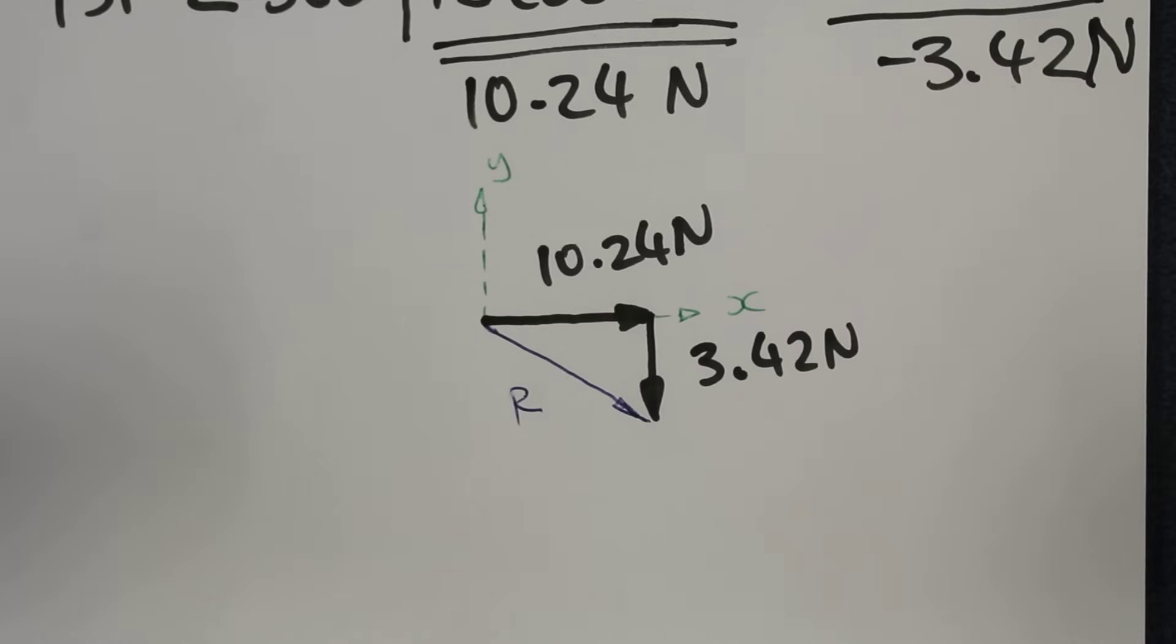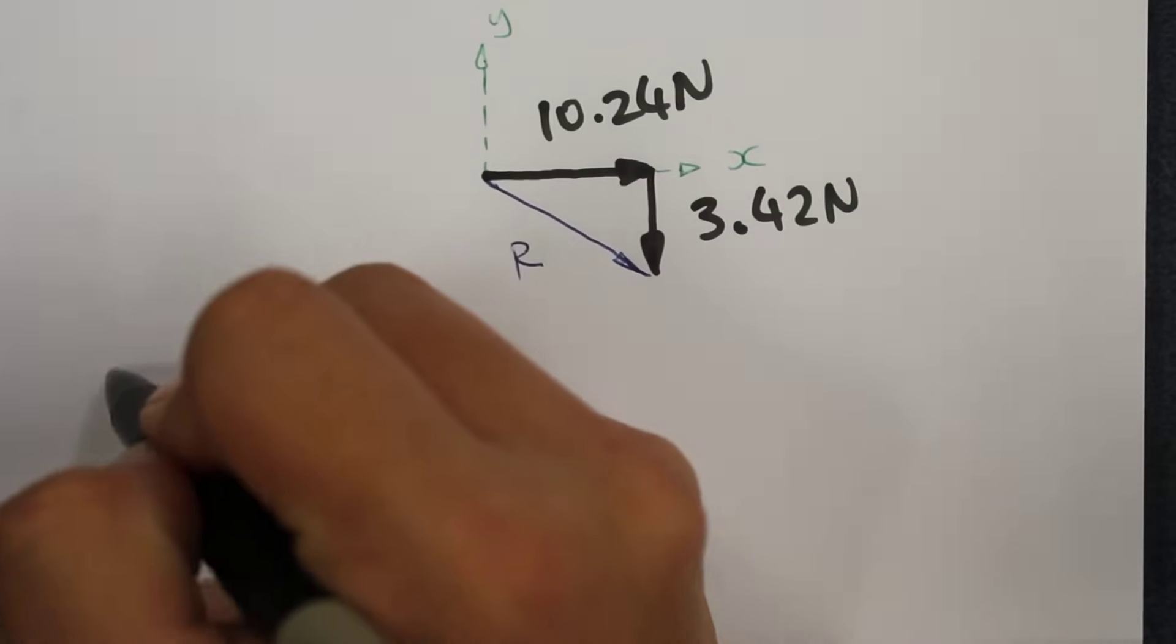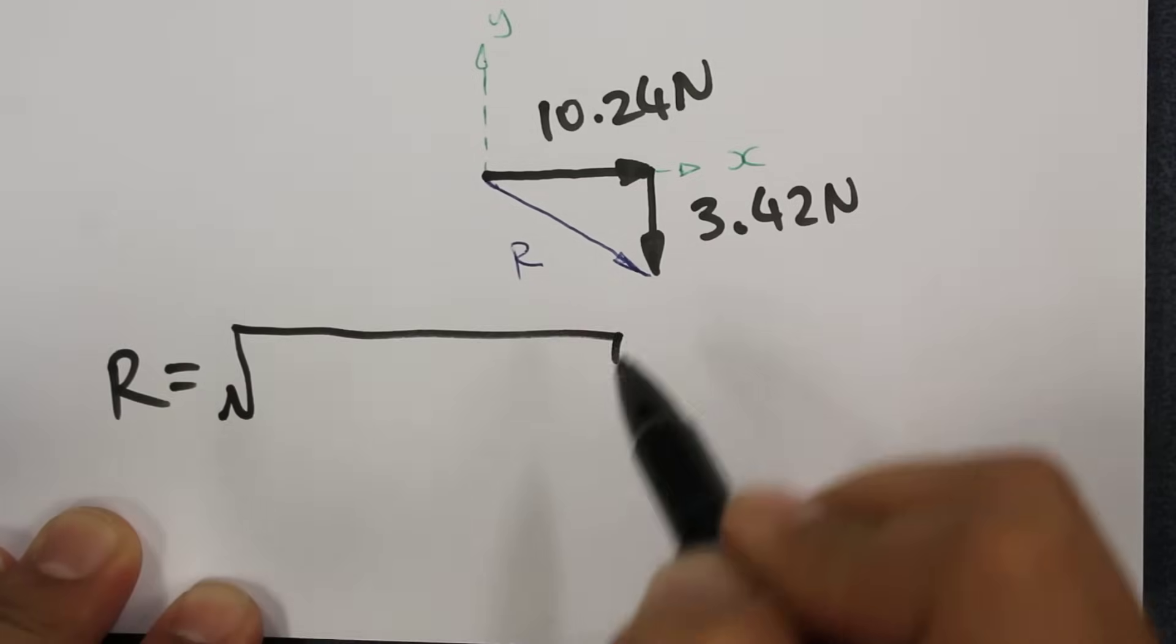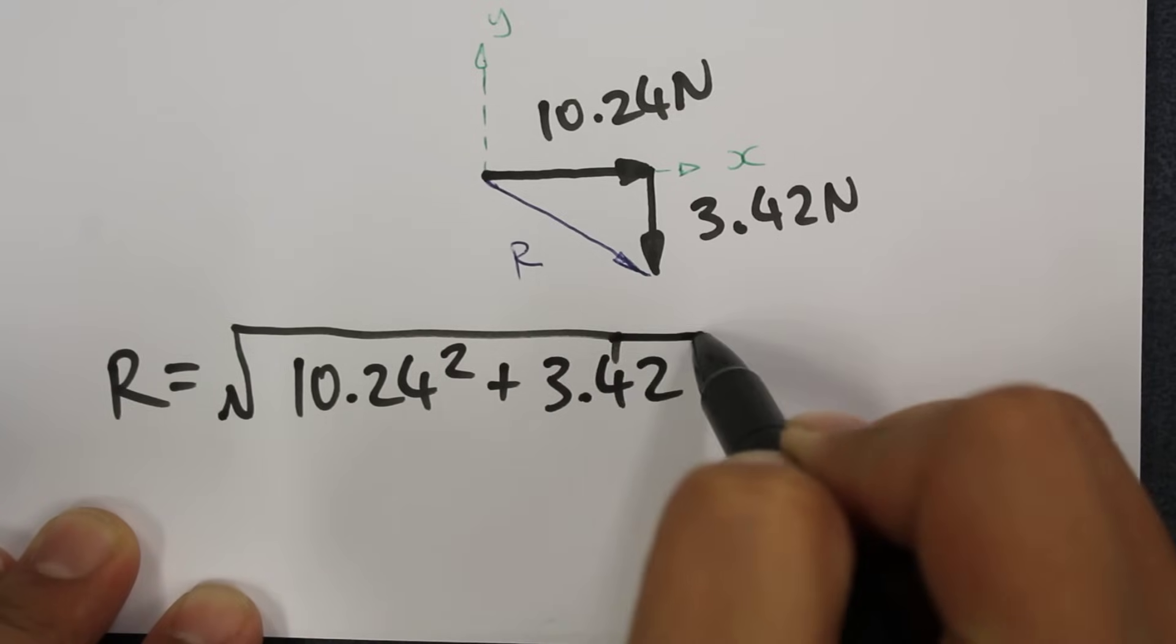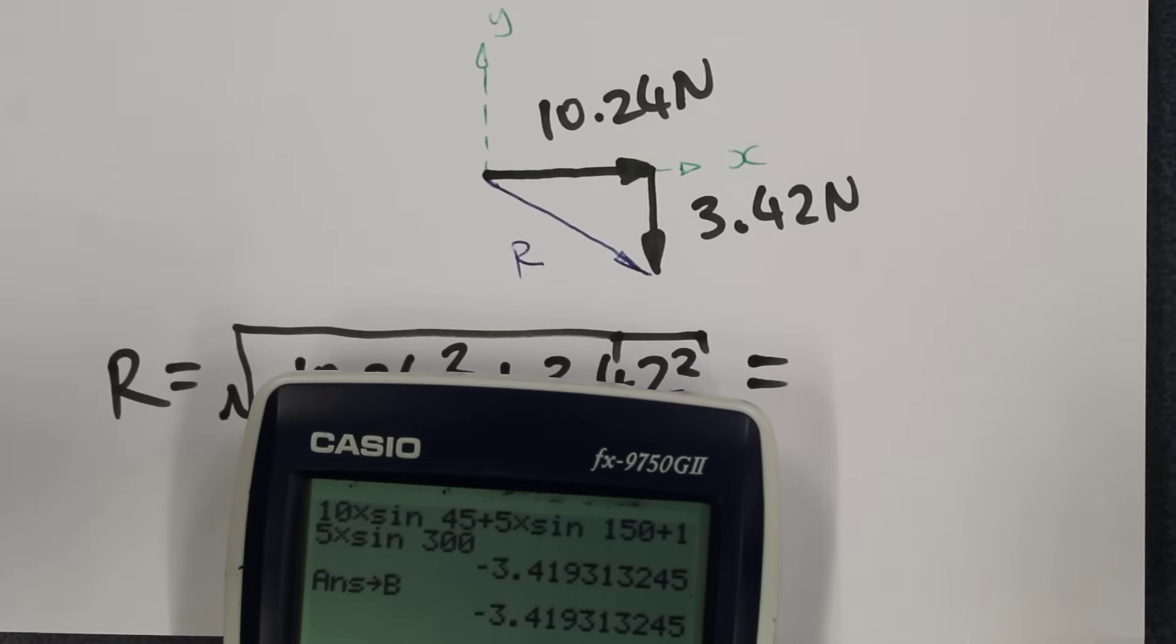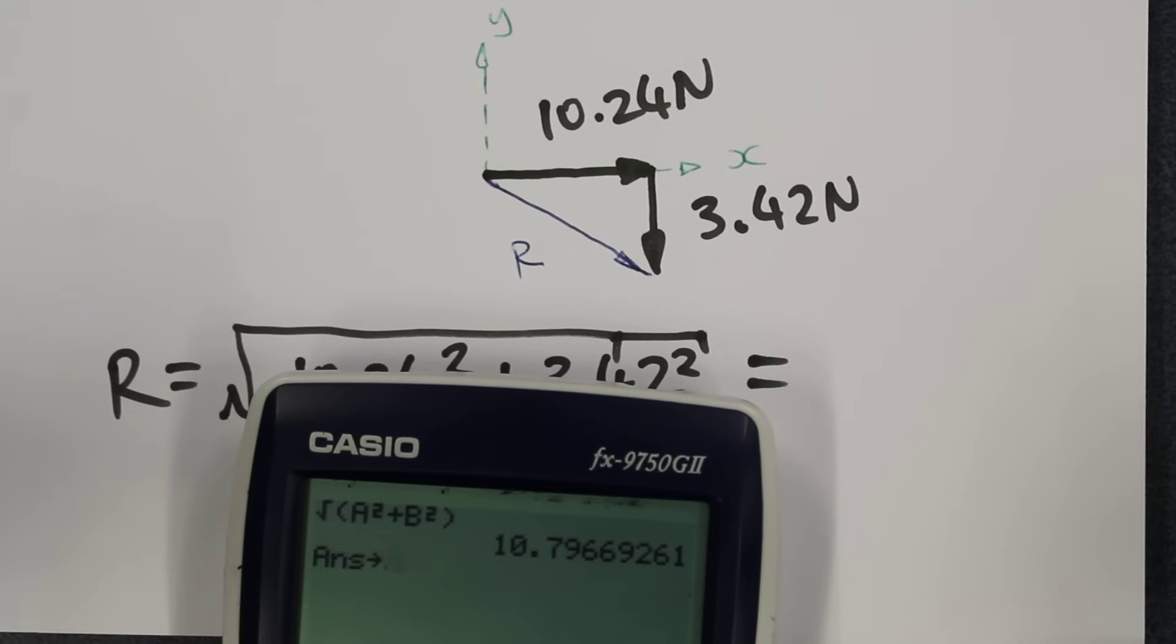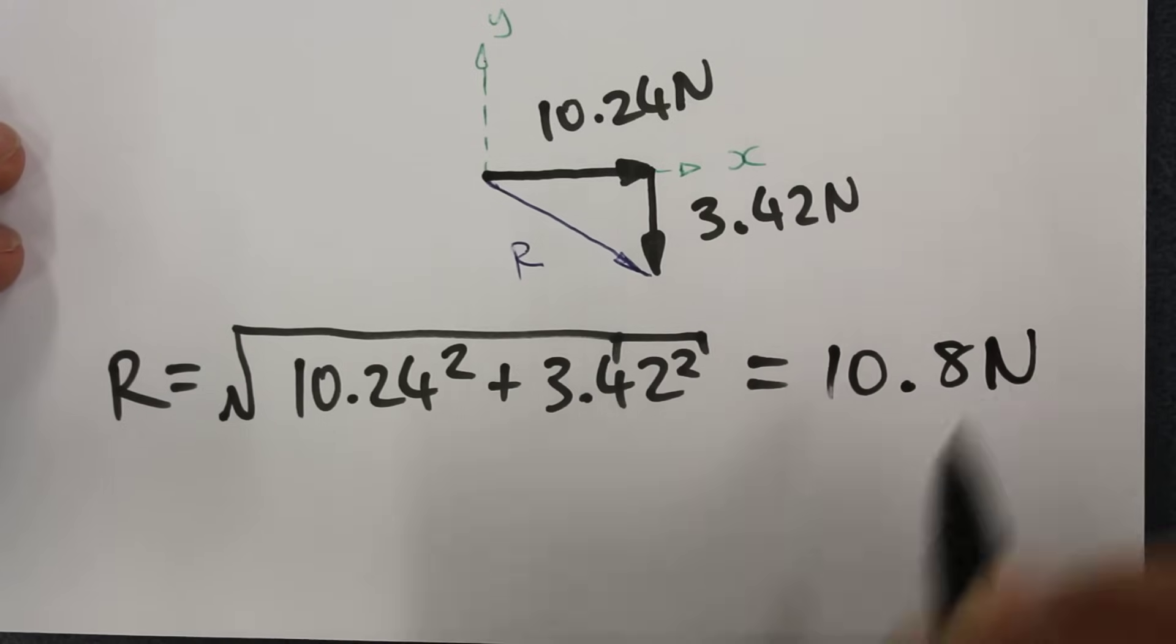Our resultant force R can be found using Pythagoras. R will be equal to the square root of 10.24 squared plus 3.42 squared. The value that we get here will be 10.79 or around about 10.8 as our value for our resultant force. So 10.8 newtons as our resultant force.